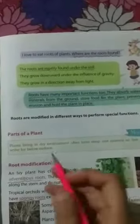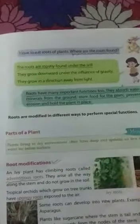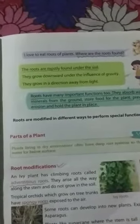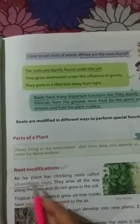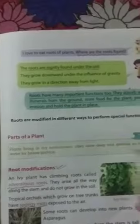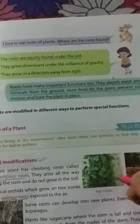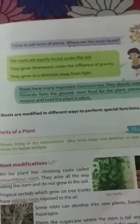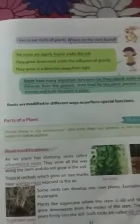Now the next topic is about root modification. We will read today about many modified roots. Number one: adventitious roots. The ivy plant has climbing roots called adventitious roots. I will show you one picture. This is the ivy plant and it doesn't need any soil to grow. That's why it is just climbing over anywhere.